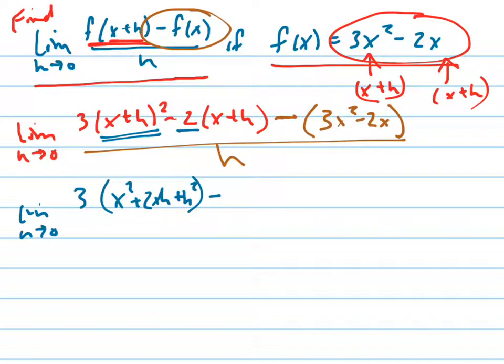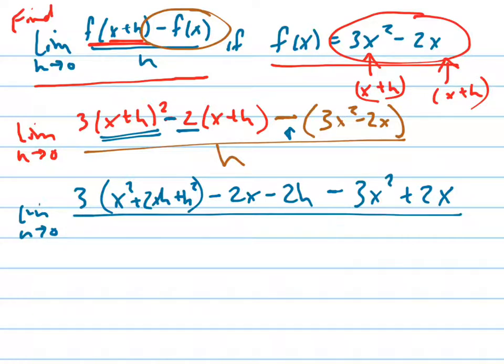Minus—distribute that negative 2 in: minus 2x minus 2h. Be careful with that negative, that's what most people forget. Then minus, distribute that negative to both terms: -3x² + 2x. So that negative 2x and positive 2x cancel to zero, all over h.